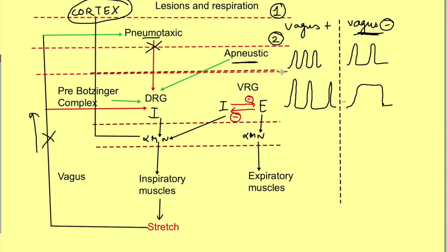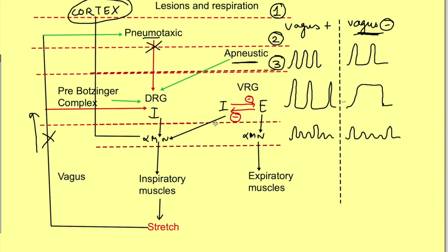If the lesion is between the pons and medulla, some pattern of respiration from the pre-Bötzinger complex remains but it is not fine-tuned, so the fine-tuned respiration produced by all the centers together is missing. If the vagus is also cut, some pattern remains but the depth of respiration is greater. Finally, a lesion below the medulla cuts off all centers from the alpha motor neurons of inspiratory and expiratory muscles, resulting in complete stoppage of respiration — apnea.